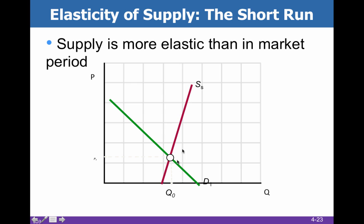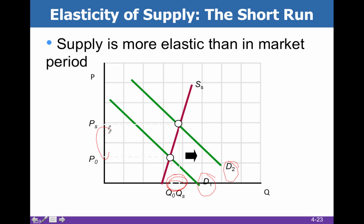In the short run, we don't have that same vertical supply curve — it is upsloping, like we would expect. When demand increases from D1 to D2, we now have an increase in quantity supplied. Part of the increase in demand is absorbed through an increase in quantity, and part is absorbed through an increase in price. In the short run, we could choose to plant fewer crops and decrease quantity supplied, so it works exactly the same, just in the opposite direction.